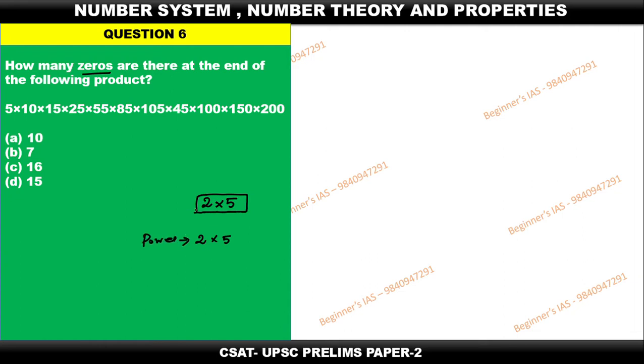First of all, express the terms with respect to 2 into 5. Check the powers of 2 and 5. The third step is take the minimum power among 2 and 5. That is going to be the number of zeros present in the given expression. If you understand these steps, you can find out the number of zeros for any problem.